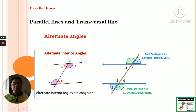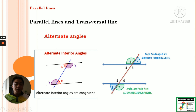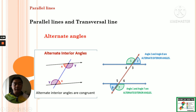For alternate exterior angles, these are also alternate but they are found on the exterior side of the parallel lines, outside. So angle 1 is equal to angle 7 — they are alternate exterior angles. Angle 2 and angle 7 are also alternate exterior angles, outside the parallel lines, one on the right and the other on the left.